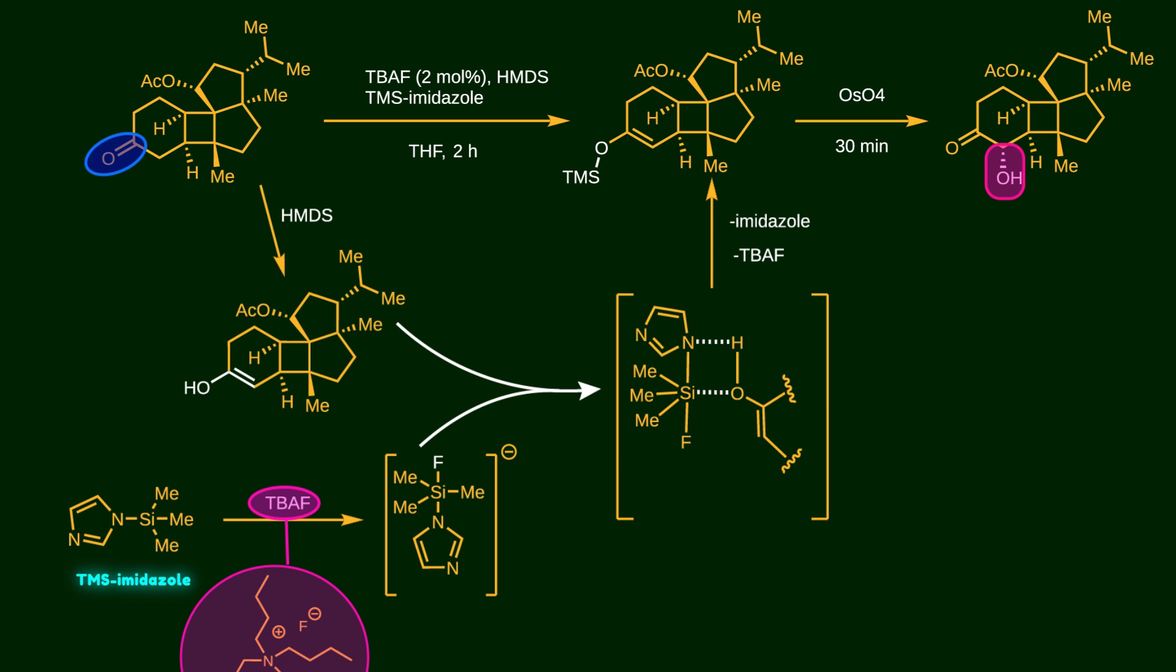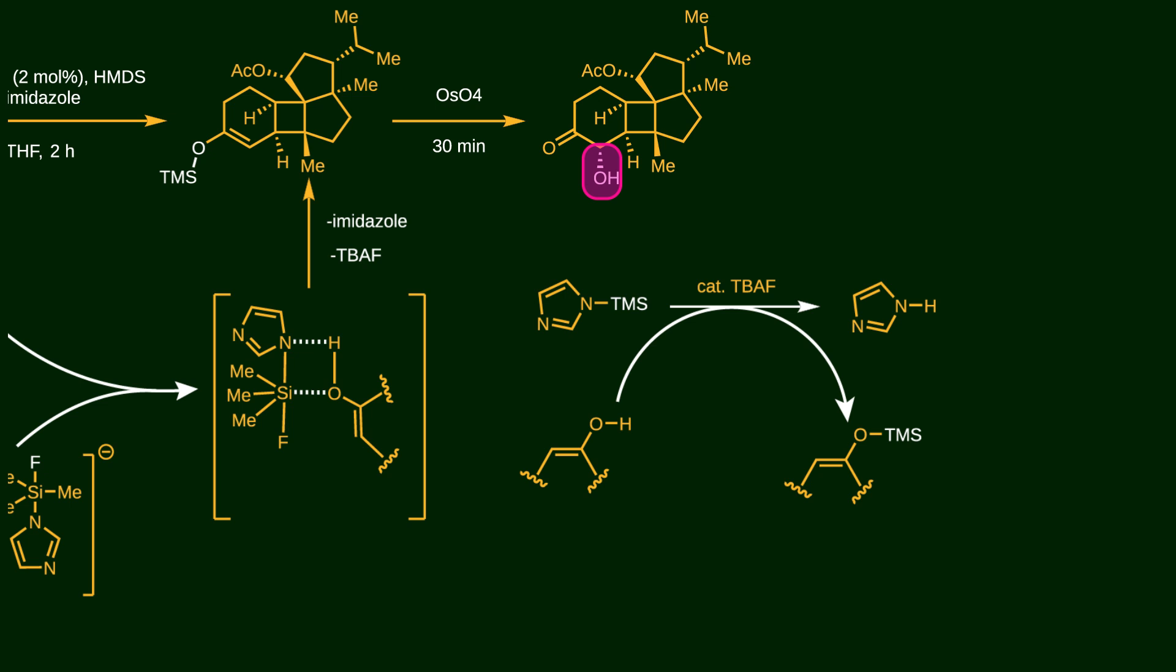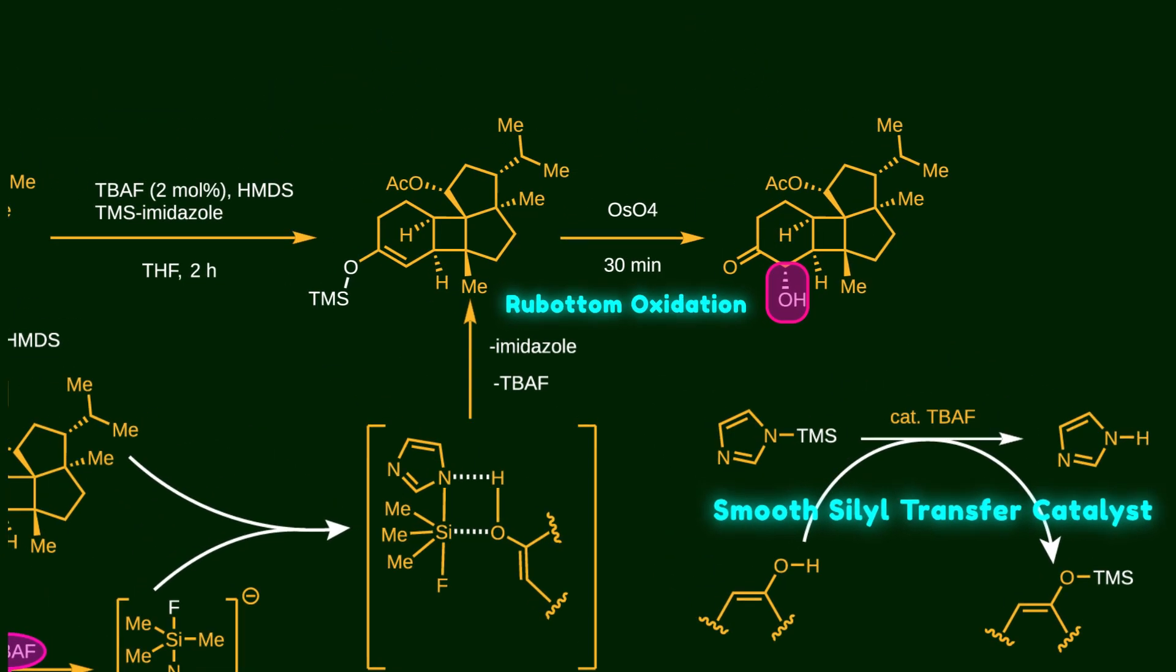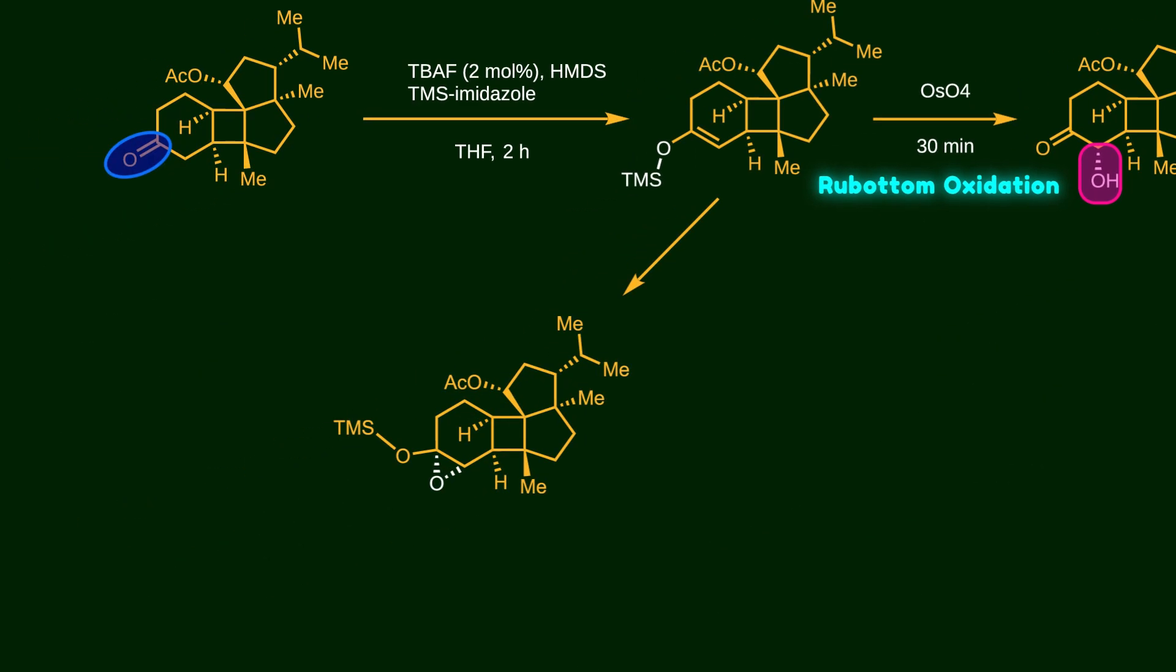This approach has two big advantages: it works under mild reaction conditions and it gives high regioselectivity. In fact, a catalytic amount of TBAF acts as a smooth silyl transfer catalyst, moving the silyl group from nitrogen to the hydroxy group. After silylation, the hydroxy group is installed on the molecule by Rubottom oxidation.